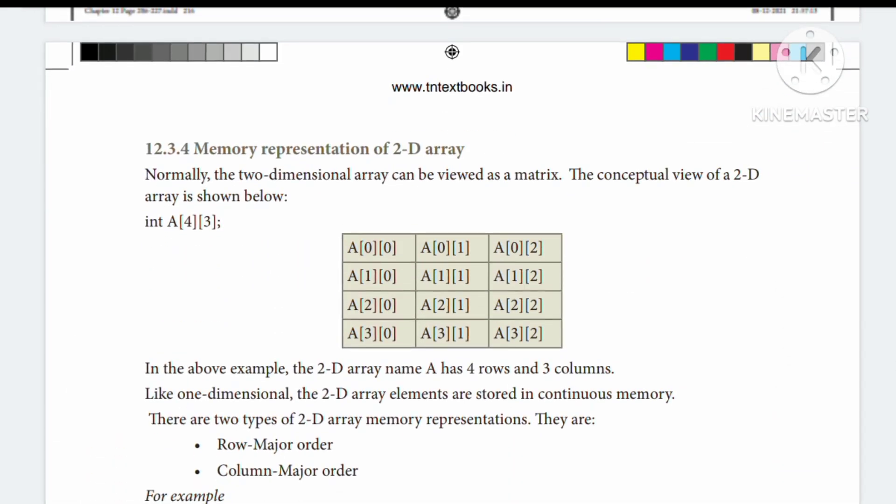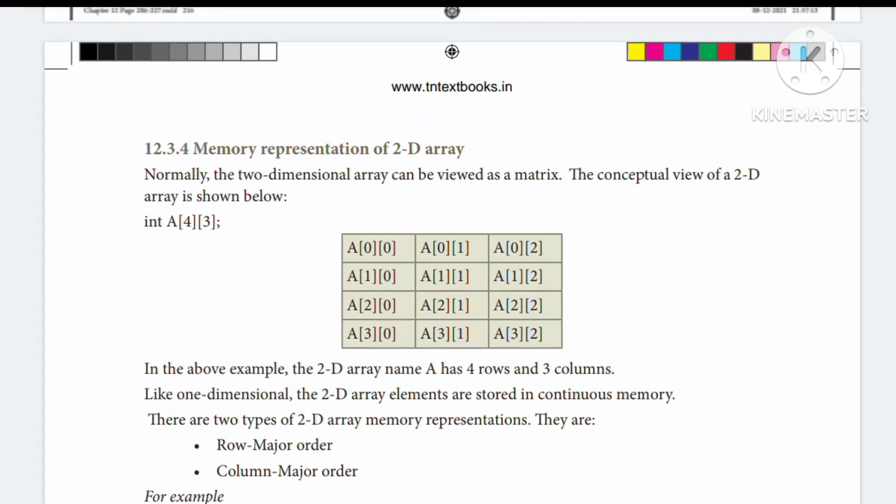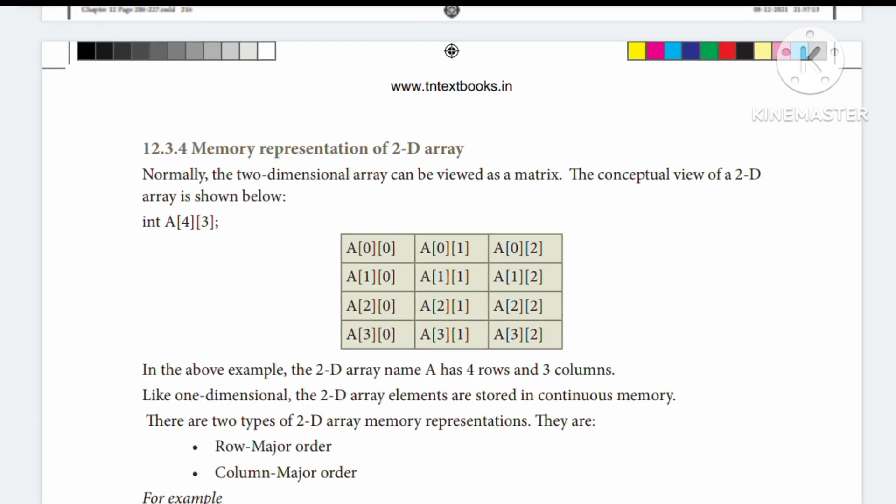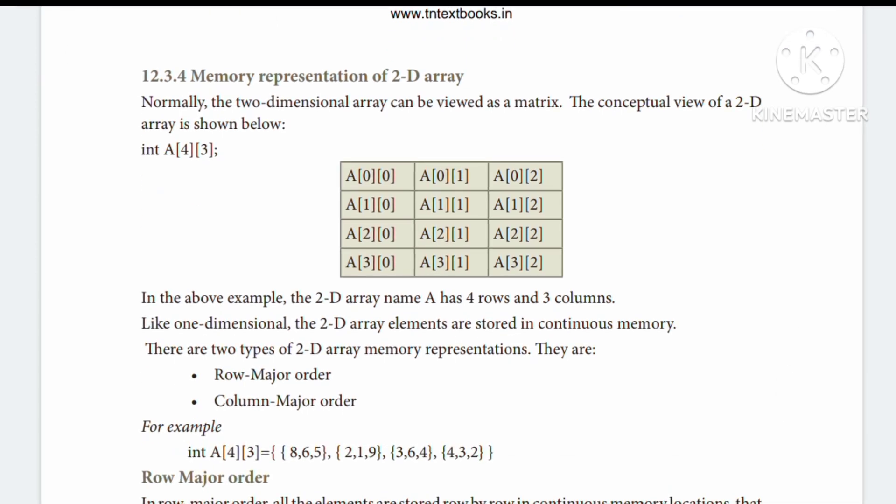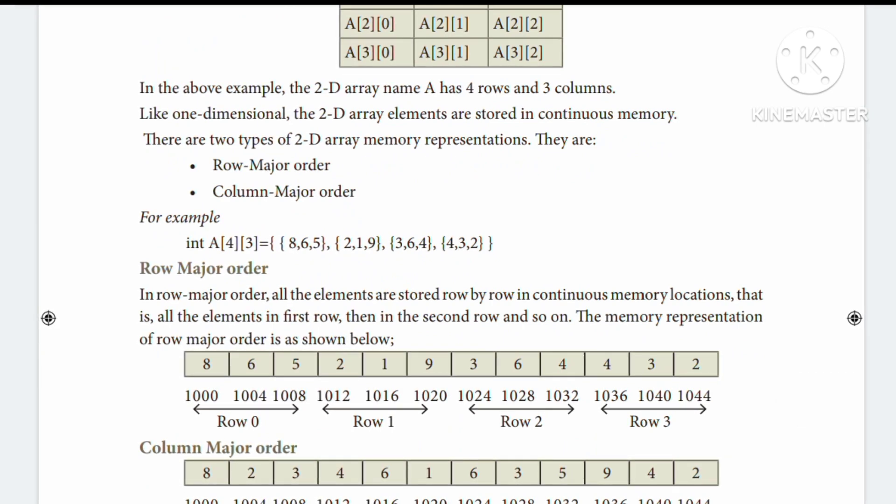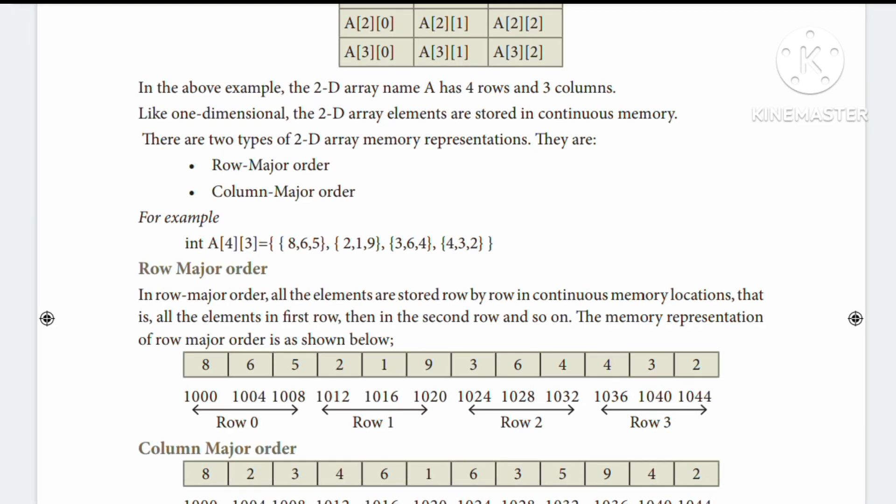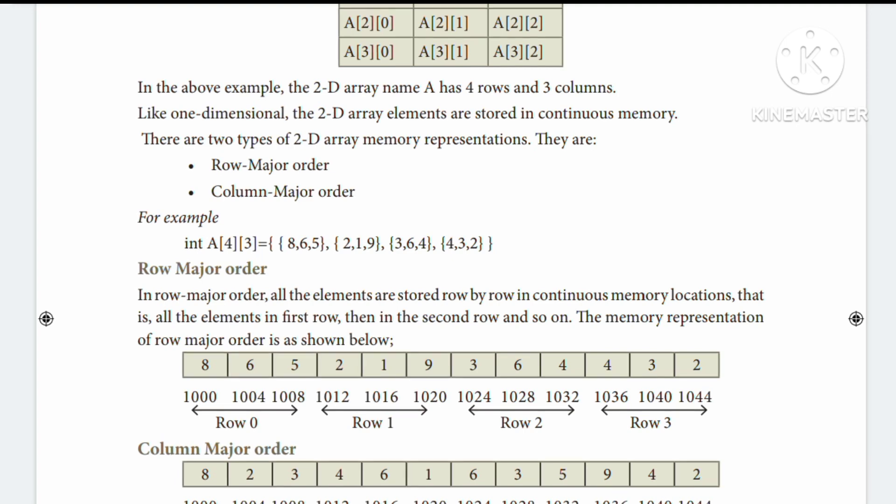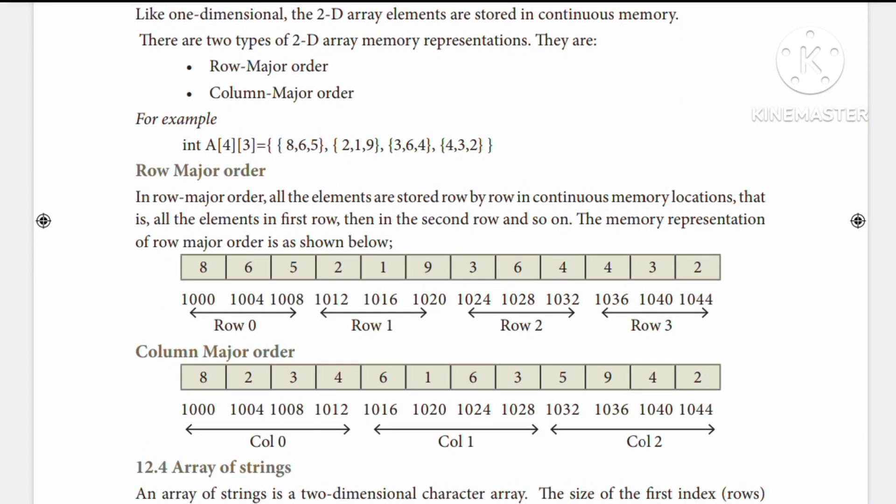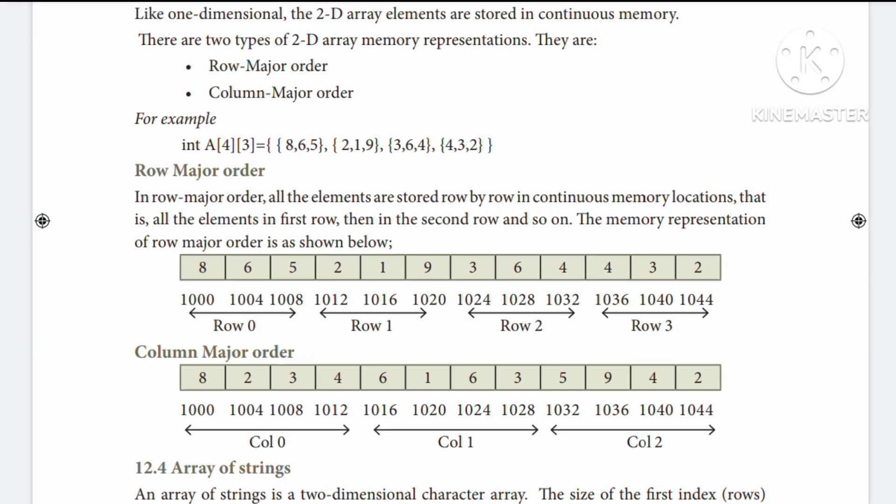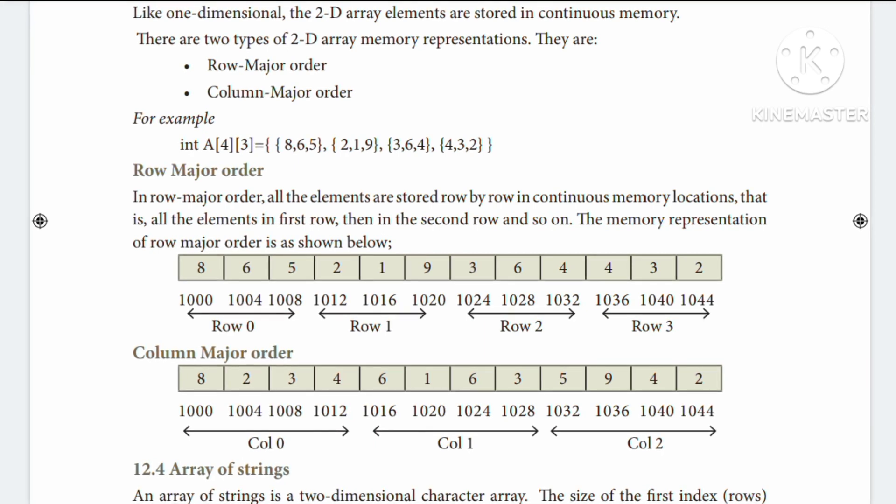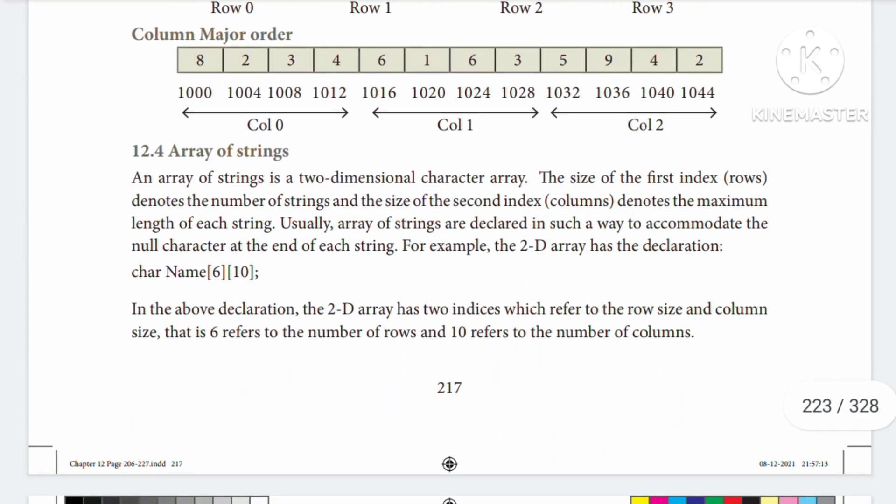Next is memory representation. In 2D arrays, memory is continuous like single dimension arrays. There are two types: row major and column major order. For example, int a[4][3]. In row major order: first row is 8,6,5, second row is 2,1,9, third row is 3,6,4, fourth row is 4,3,2. In column major order, the first column is stored first: 8,2,3,4, then 6,1,6,3, and finally 5,9,4,2. This is the memory representation.